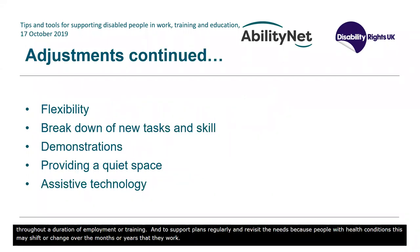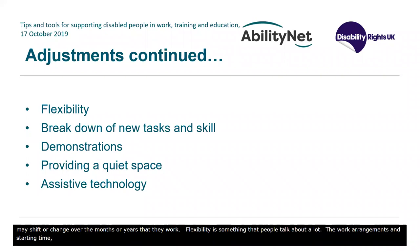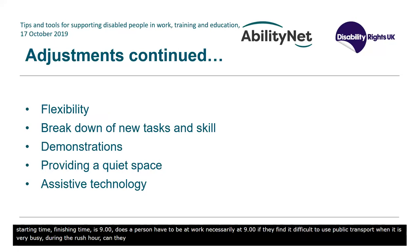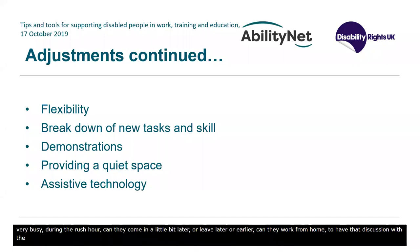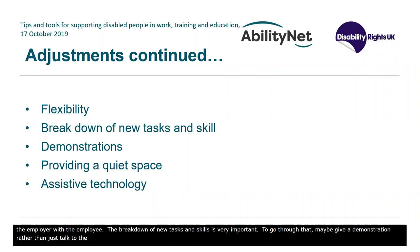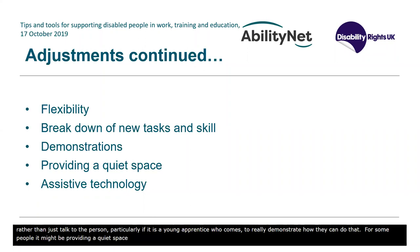Flexibility is something people talk about a lot — work arrangements, starting and finishing times. Does a person necessarily have to be at work at nine o'clock? If they find it difficult to use public transport during the rush hour, can they come in a little bit later, or leave earlier? Can they work from home? Have that discussion with the employee. The breakdown of new tasks and skills is very important — give a demonstration rather than just talking to the person, particularly with a young apprentice, to really show them how it's done. For some people it might be providing a quiet space, and then assistive technology — another big area that Adam will talk more about.